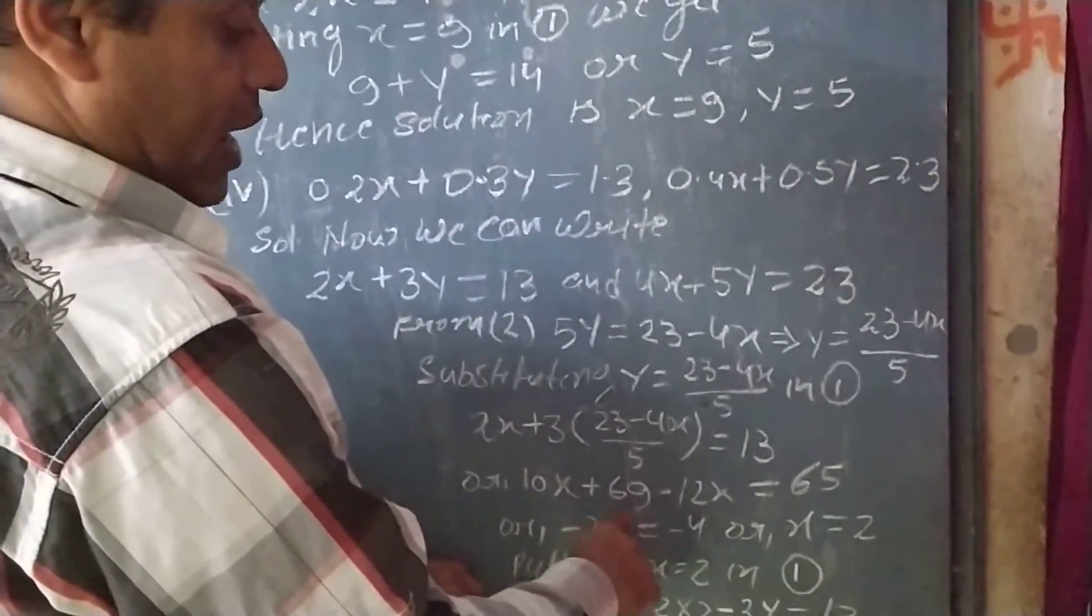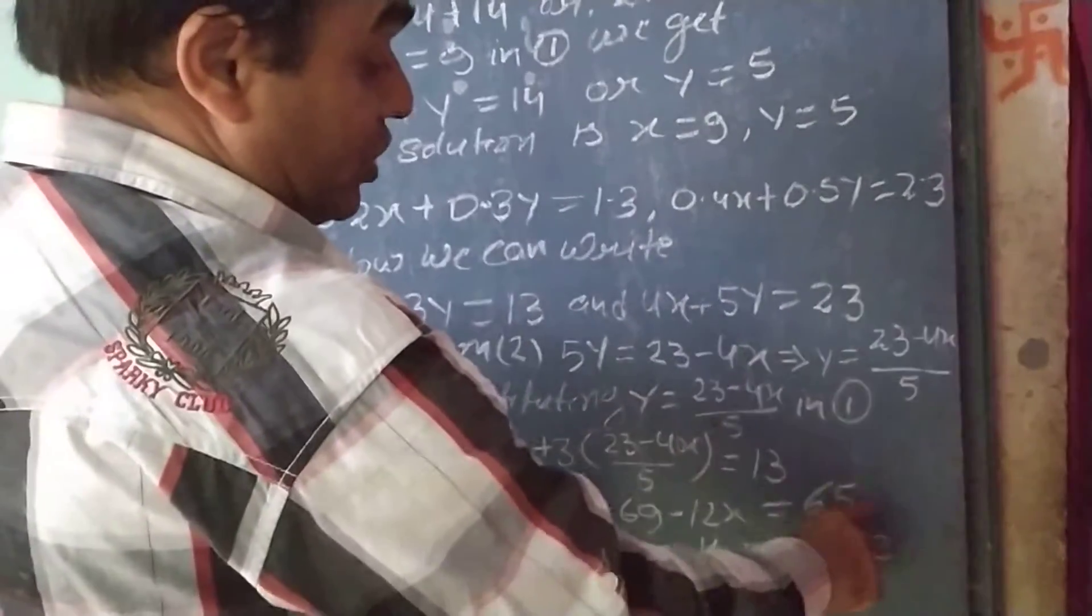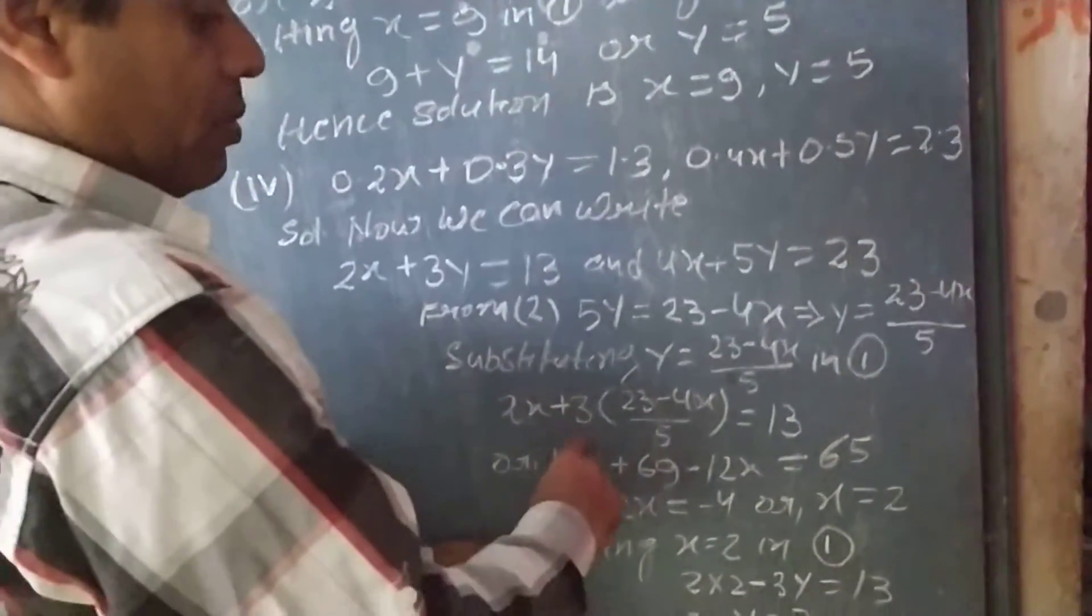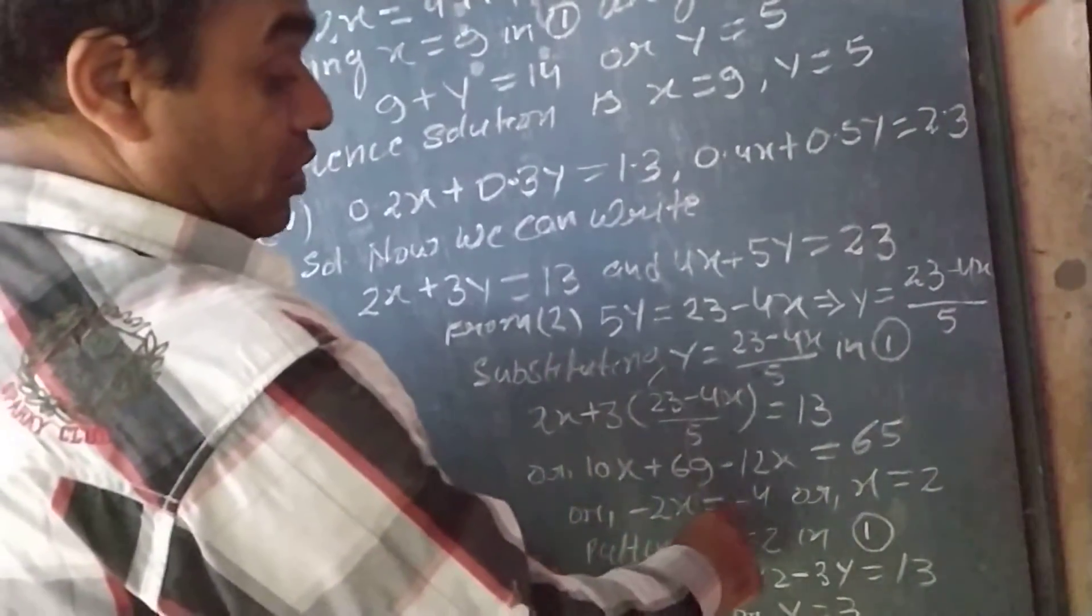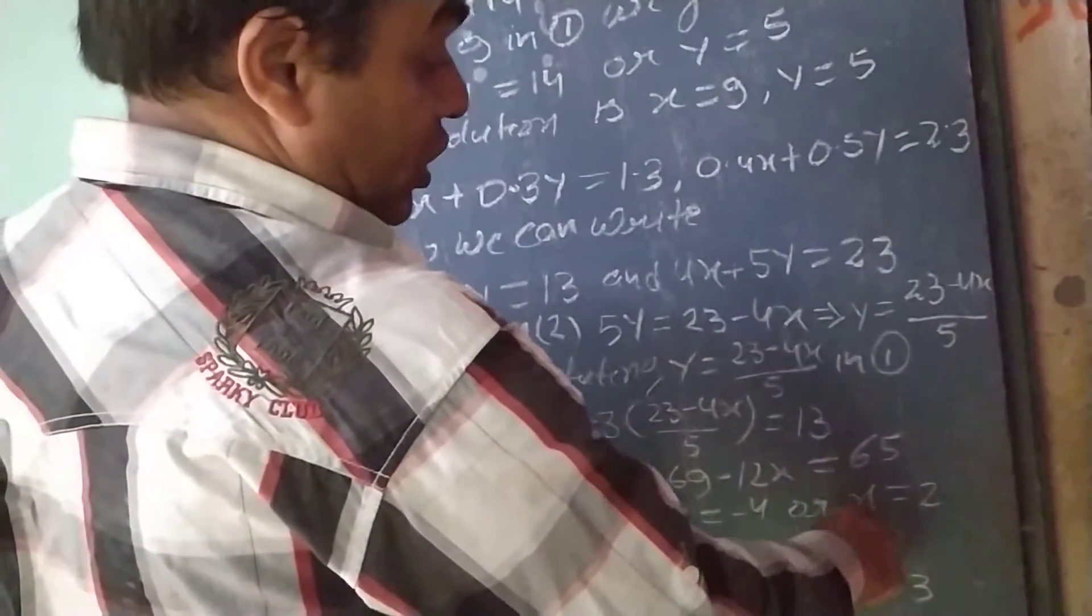Or, 10x plus 69 minus 12x equal to 65, after solving it. Or, minus 2x equal to minus 4, or x equal to 2.